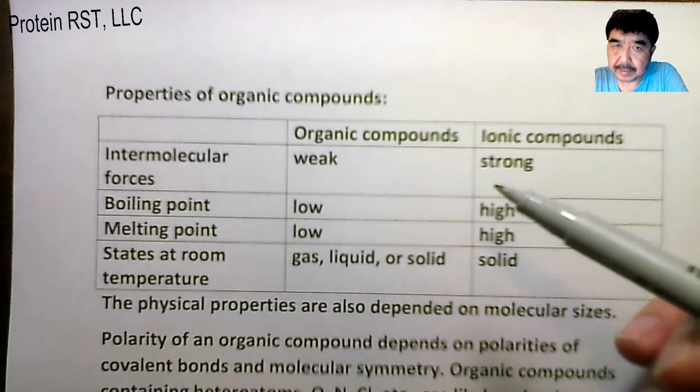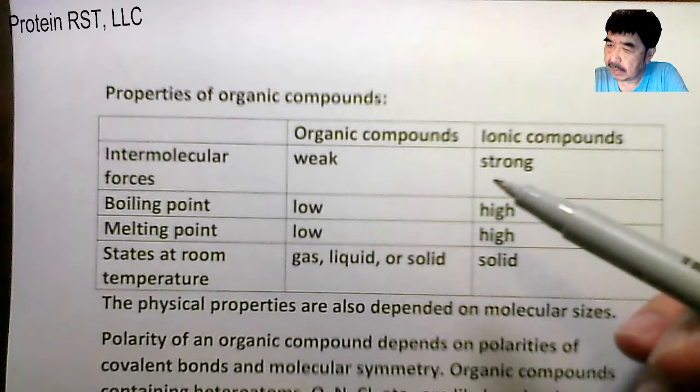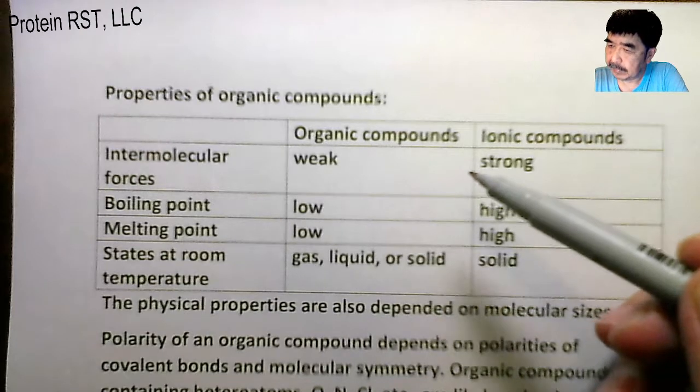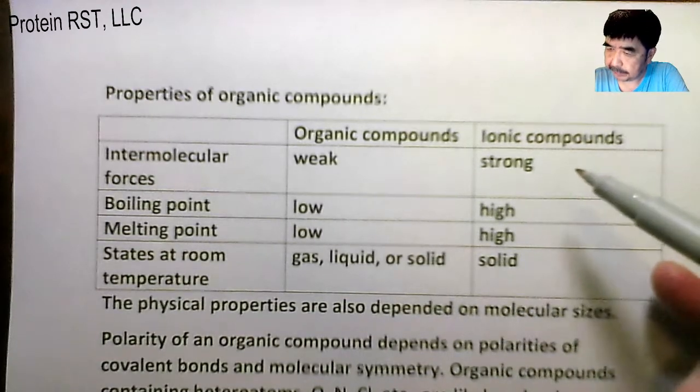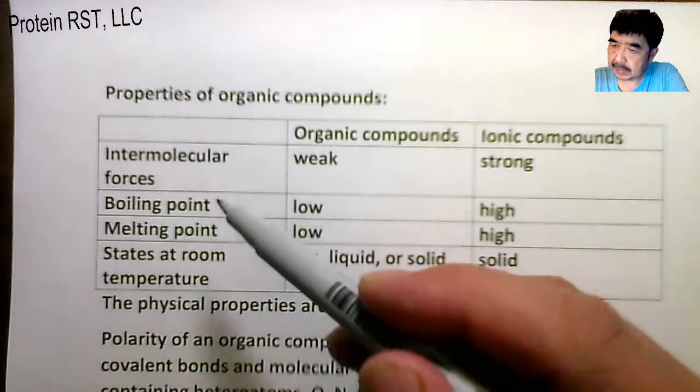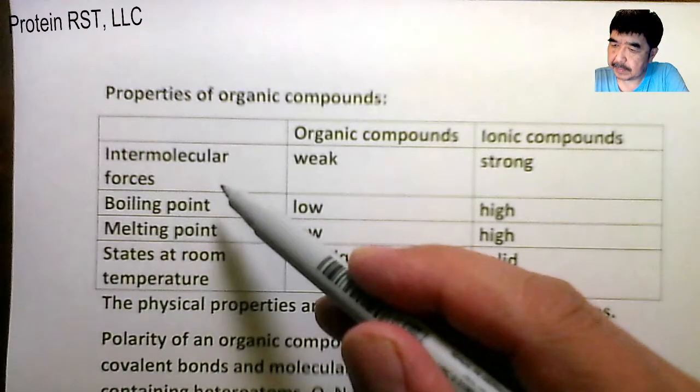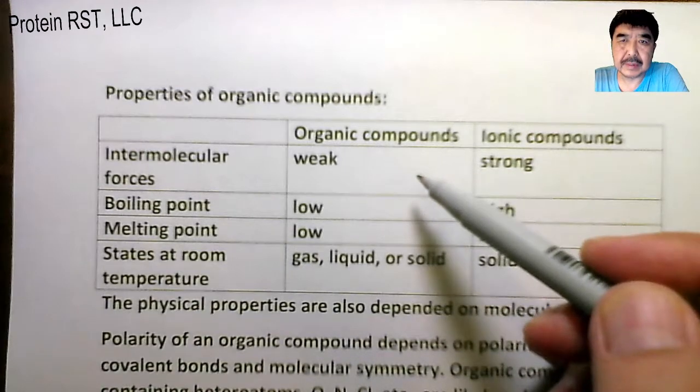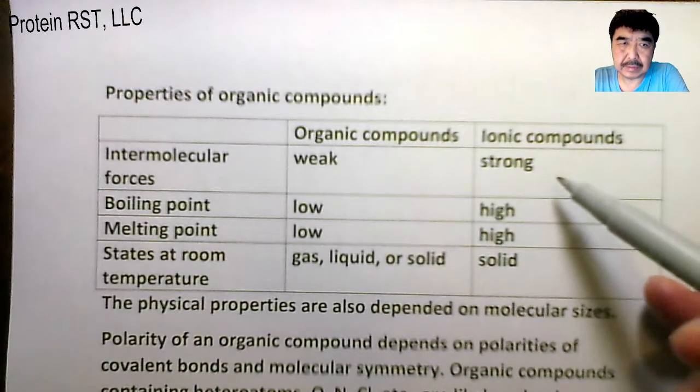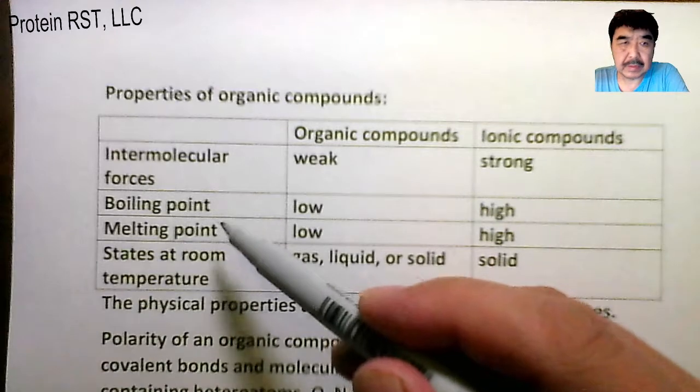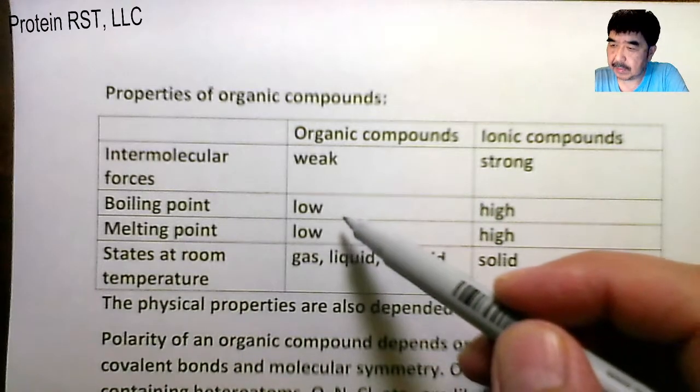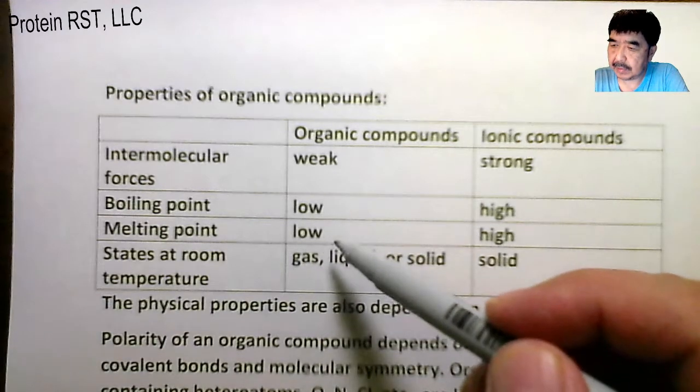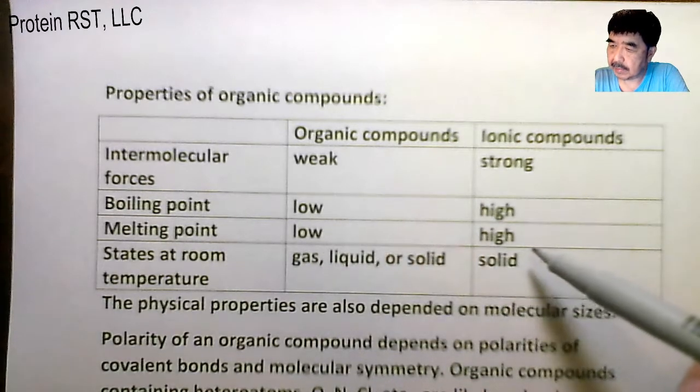This is a comparison between organic compounds and ionic compounds. First is the intermolecular force: organic compounds weak, ionic compounds strong. Boiling point: organic compounds low, ionic compounds high. Melting point: organic compounds low, ionic compounds high.